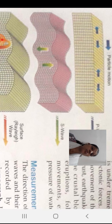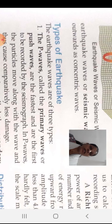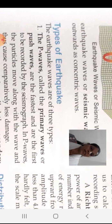Now let's understand the types of earthquake waves. P stands for primary waves, also called push waves. These are the fastest and the first to be recorded on the seismograph. Whenever an earthquake occurs, the instrument used to measure it is called a seismograph, and the first waves recorded by it are the primary waves, or P waves.